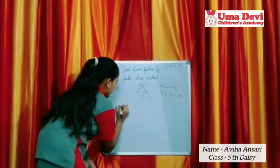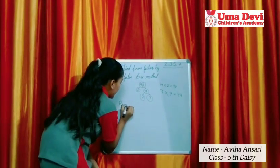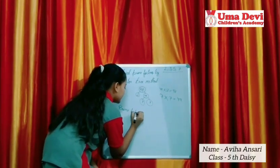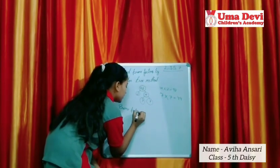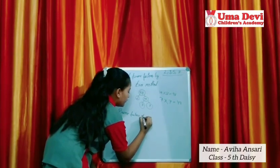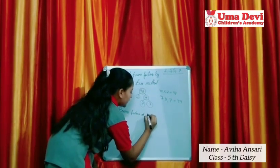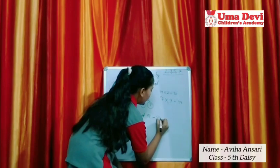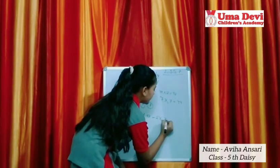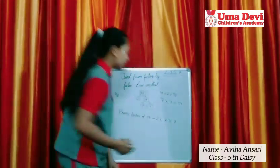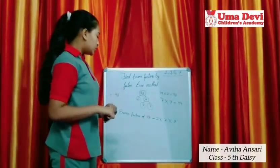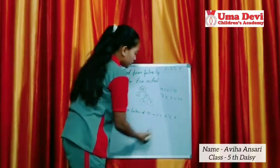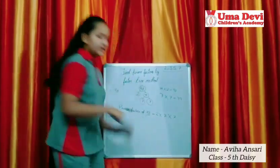So we will write the prime factors here. When we multiply these numbers, we get our answer.